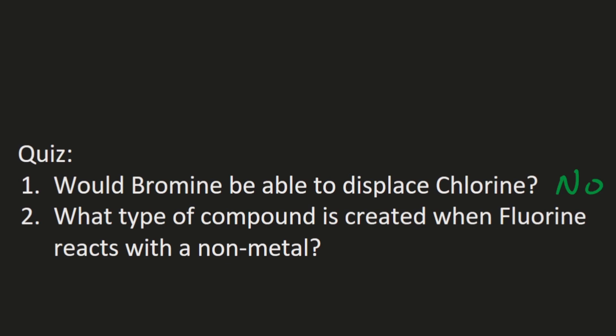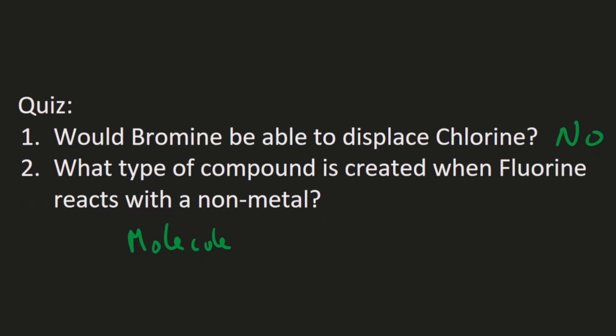Question two: what type of compound is created when fluorine reacts with a non-metal? When a halogen reacts with a non-metal, they end up sharing electrons because they're two non-metals reacting, and therefore you get a molecule. Form a molecular compound. So those are the questions - hopefully that all makes sense, and I'll see you guys in the next one.